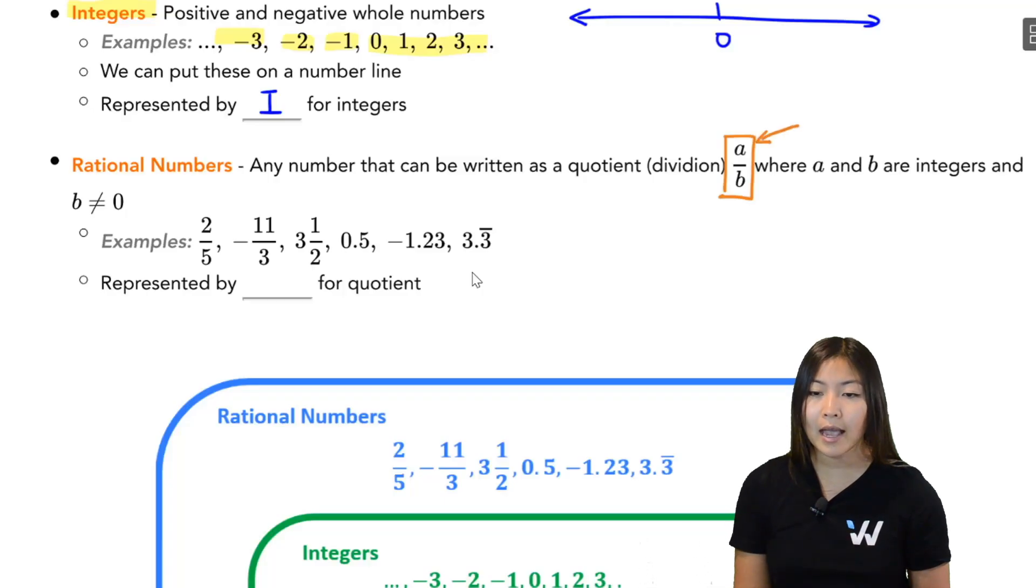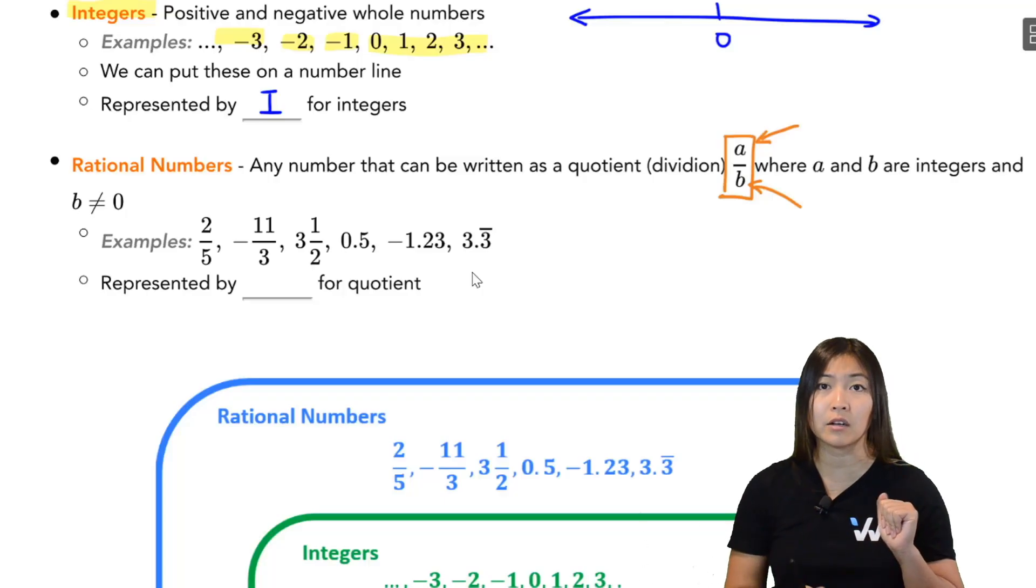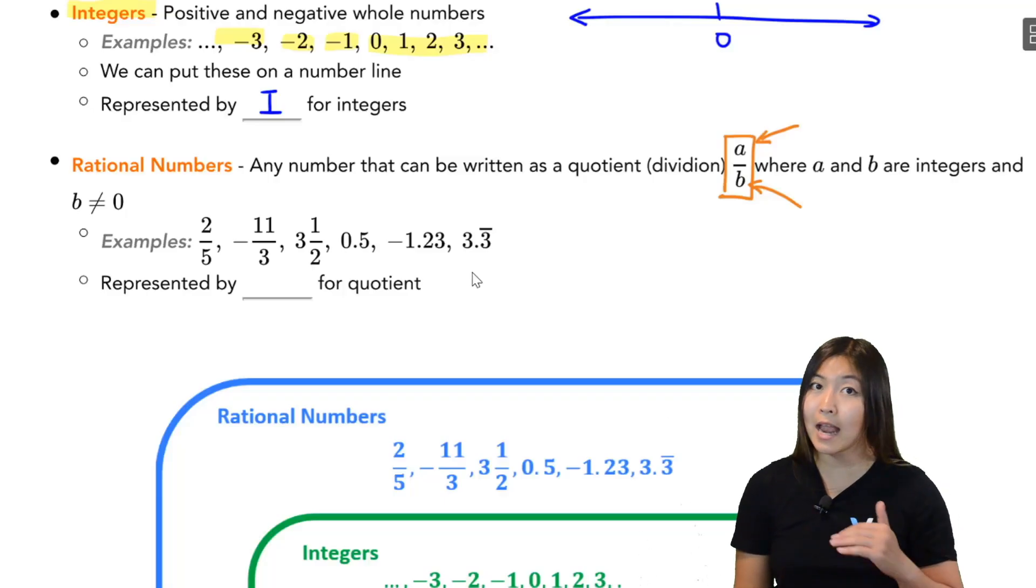Now, a has to be an integer. For example, 2, 3, negative 5, negative 7. b also has to be an integer. But b cannot be zero because think about it. If I take 5 divided by zero in my calculator, I'm going to break my calculator. It's going to say undefined. So we can't divide by zero. So a and b are any integers you can think of except for the fact that b cannot be zero.